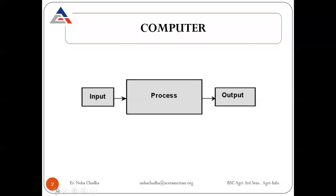As the diagram shows, you will give input to the computer, process the input, and get the output. For example, when you are going to make a vegetable, firstly raw vegetable is available to you, then you cook it — that means you process it — and finally you get the cooked vegetable as output. Similarly, we give raw data to the computer, the data is processed, and finally we get the output.